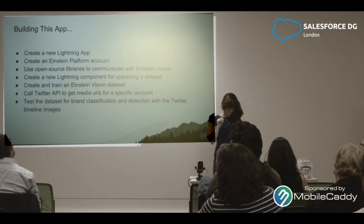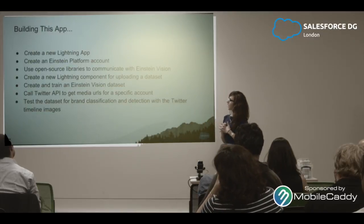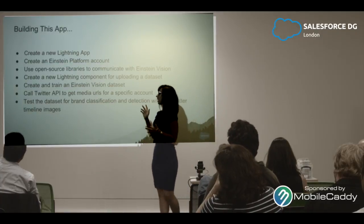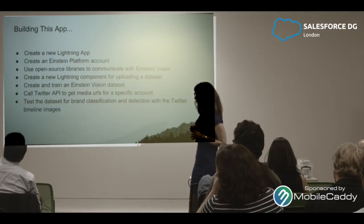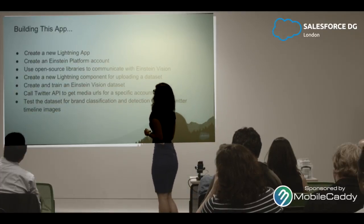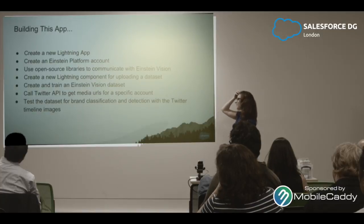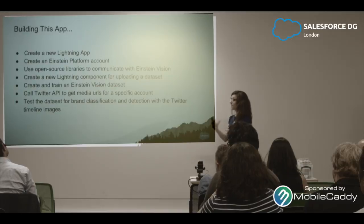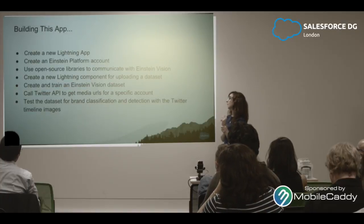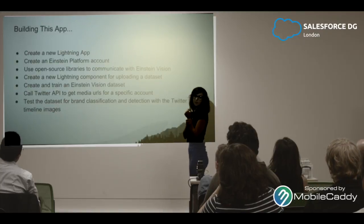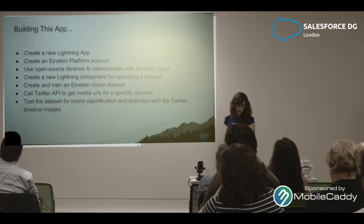What I include in this app: I'm going to create a new Lightning app. To use Einstein platform services, I have to create an Einstein account. I'm going to use open source libraries to communicate with the API, create a new Lightning component to upload the dataset — taken from the Trailhead example. Then create and train an Einstein Vision dataset, code the Twitter API to get the timeline for my account, and test this dataset for brands.